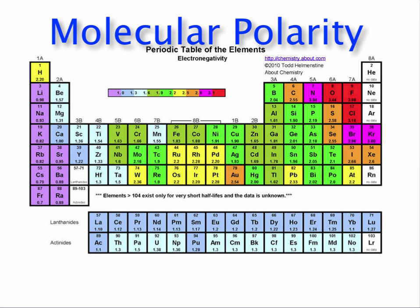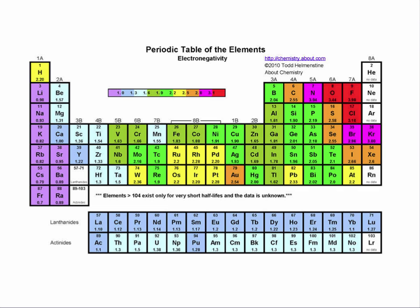Okay, so now that we've had some practice drawing Lewis dot structures and we've made the connection between valence electrons and lone pairs and bonding pairs and how they affect the molecular geometry, it's time to look at something new. Something new that affects the way that molecules behave, and specifically what we're going to talk about now is molecular polarity, whether or not a molecule is polar or not, and also bond polarity, whether or not a bond within a molecule is polar or not.